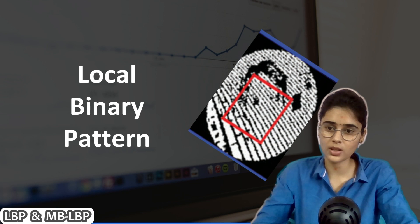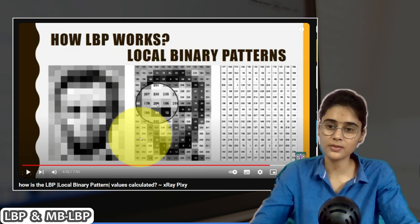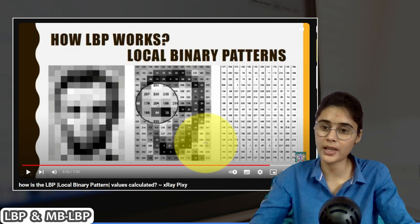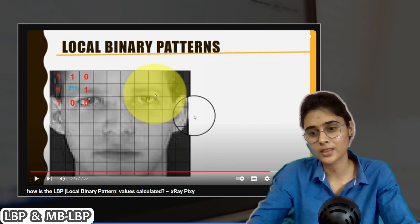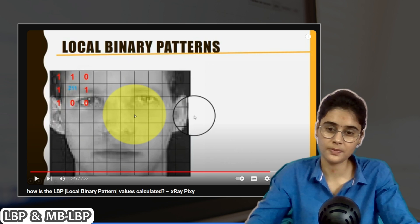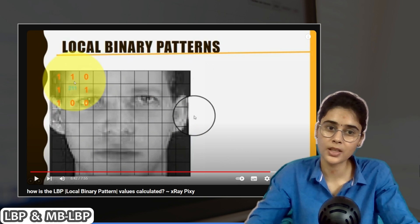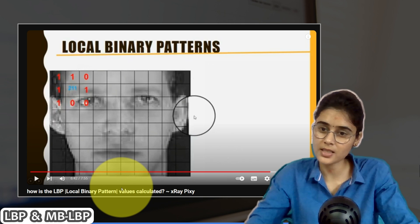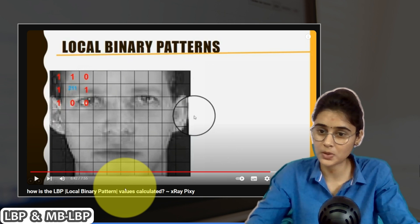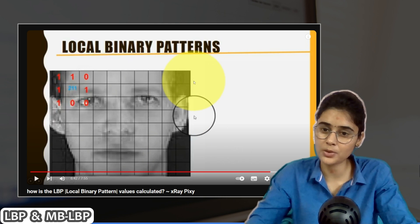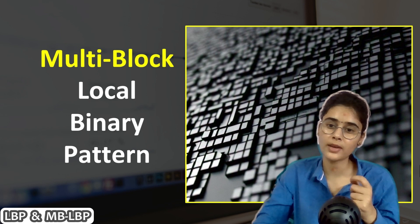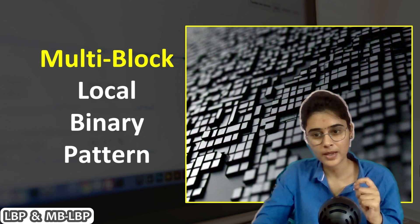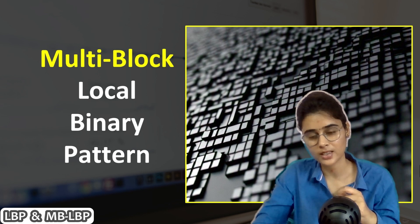In this video we will learn about local binary patterns. We already discussed in a previous video how we can calculate LBP values for different pixels, focusing on how to calculate the LBP value for the center pixel. Now we will look at corner pixels, which have fewer neighbors. Using an example, we will understand how to calculate LBP values for corner pixels. Second, we will discuss multi-block local binary patterns, their advantages, and disadvantages.